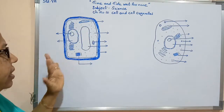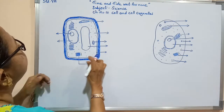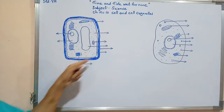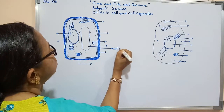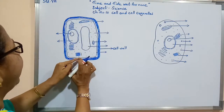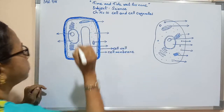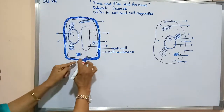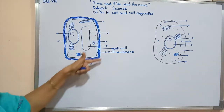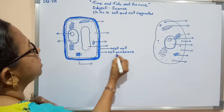Now we will study the parts of a plant cell. The plant cell has a thick cell wall. This thick part of the plant cell is known as the cell wall. Inside this cell wall there is a membrane — a bag — and this is known as the cell membrane. The plant cell has a definite shape, a thick cell wall, and inside the cell wall a bag known as the cell membrane.